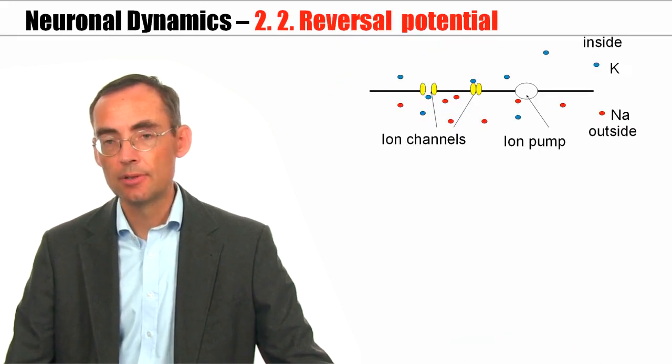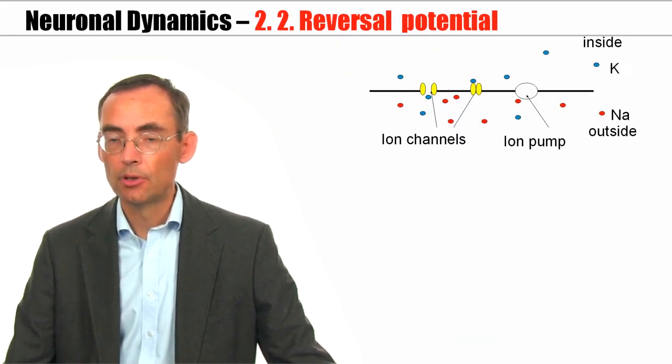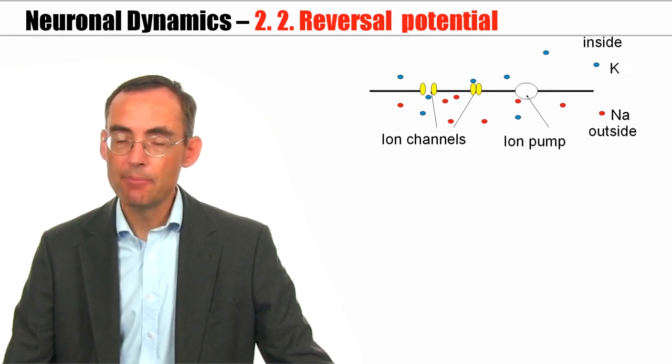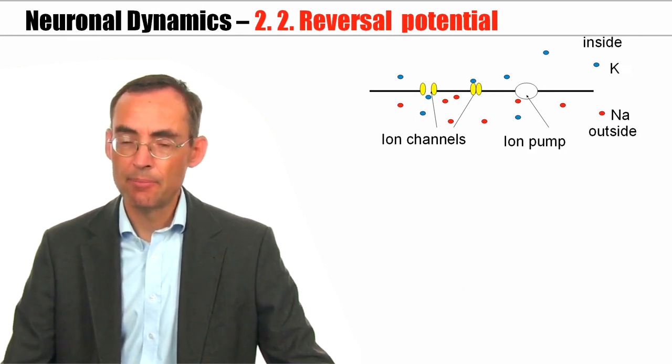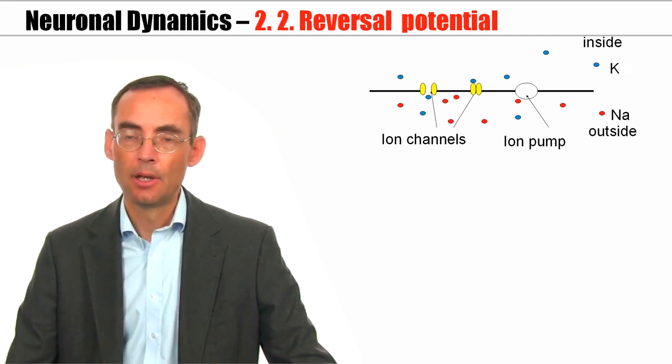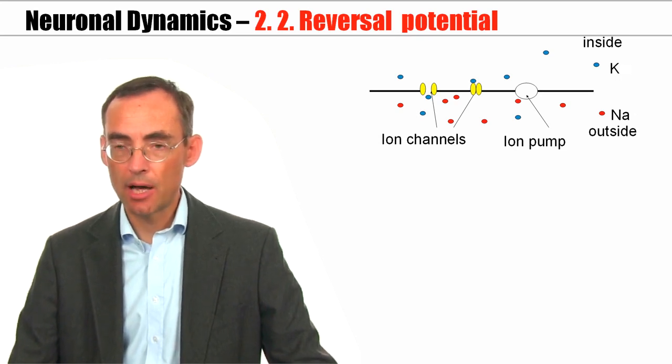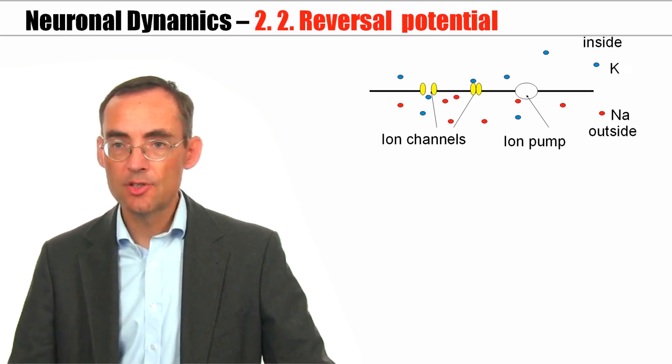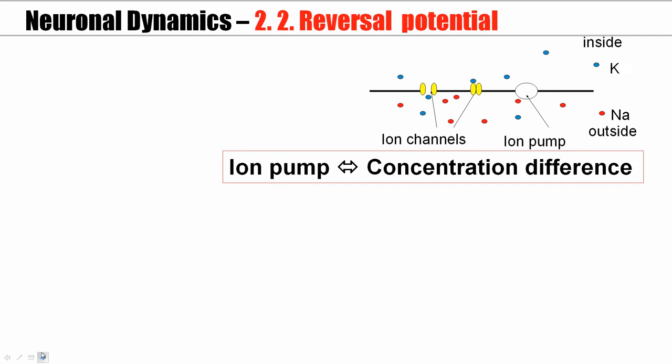In order to answer this question we have to remember that the cell is surrounded by a membrane. Embedded in the membrane there are ion channels and ion pumps. Ion pumps push sodium ions from inside the cell towards the outside, creating a difference in concentration. At the same time, these ion pumps transport potassium from the outside of the cell to the inside.